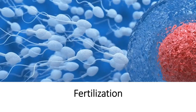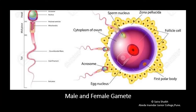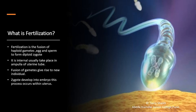Today in the human reproduction chapter, we will study about the fertilization process. These are the pictures of the male and the female gamete. Today we are going to discuss about the fertilization process, that is the fusion of male and the female gamete. Let us study what fertilization is.